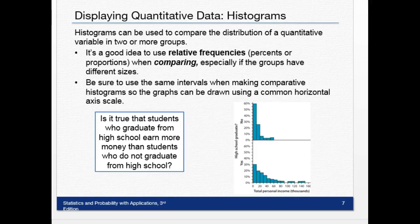Histograms can be used to compare the distributions of quantitative variables in two or more groups. It's a good idea to use relative frequencies, percents, or proportions when comparing, especially if the groups have different sizes. Be sure to use the same intervals when making comparative histograms so the graph can be drawn using a common horizontal axis scale. That gives us a better visual.